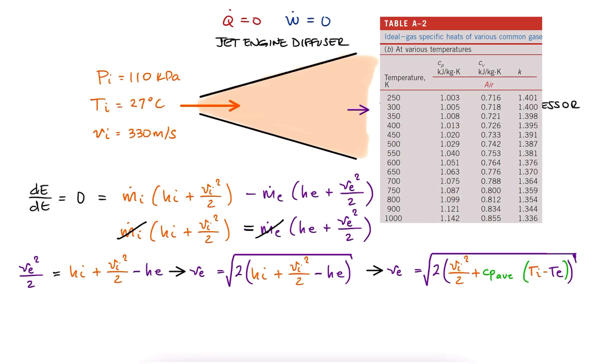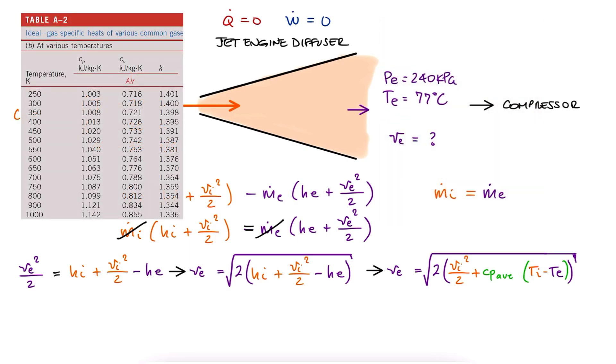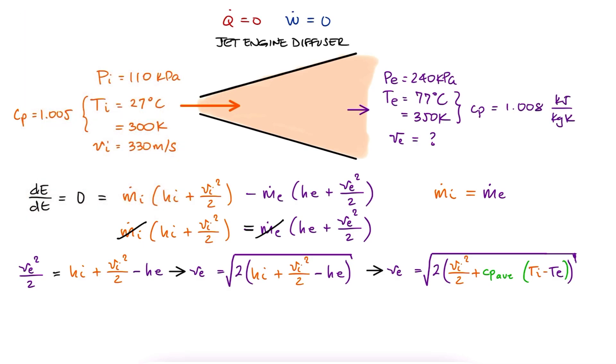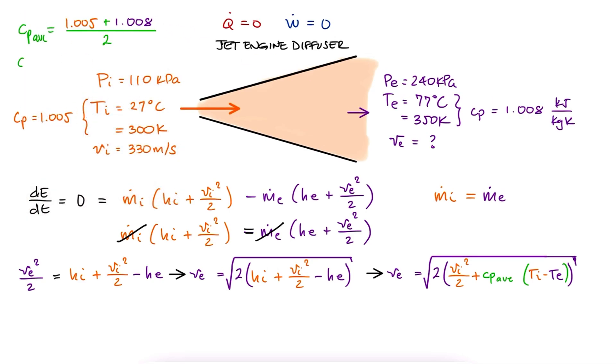Air at 27 degrees Celsius, or 300 kelvin, has a Cp of 1.005, and at 77 degrees Celsius, or 350 kelvin, has a Cp of 1.008, therefore the average Cp is 1.0065.